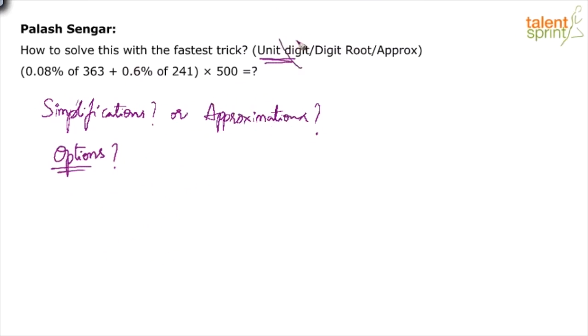Irrespective of whether the question is from simplifications or approximations, options are very much needed here. Otherwise, I have no shortcut. The only thing I could see, you want me to apply unit digit method. How can I apply unit digit method without seeing the options? First of all, I should know whether it is approximations. Suppose the question is from approximations, unit digit method and digital root method do not work. Without giving the options, I cannot help you with the best solution here or the so-called fastest trick here.